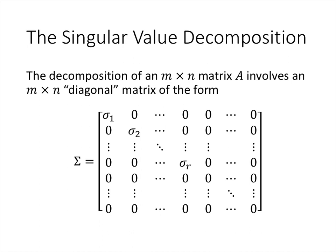Now we're ready to discuss the singular value decomposition. The matrix in the middle of the decomposition isn't quite a diagonal matrix — it's a rectangular matrix the same size as A, mostly zeros, with entries σ₁ through σᵣ along the main diagonal. So the (1,1) entry is σ₁, the (2,2) entry is σ₂, up through the (r,r) entry being σᵣ, and every other entry is zero.